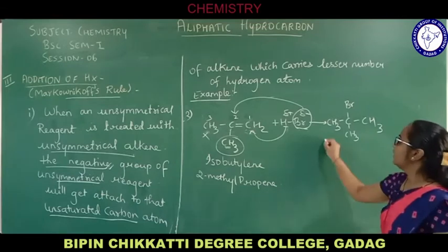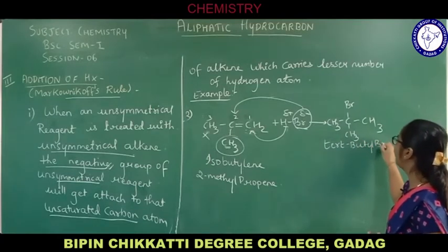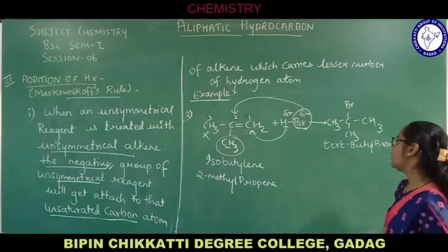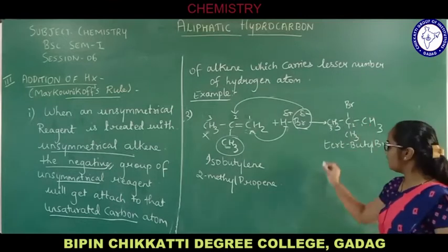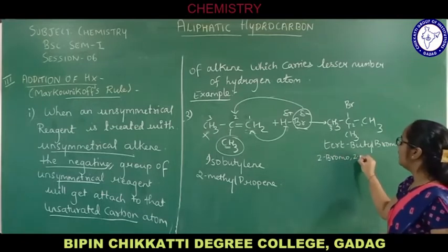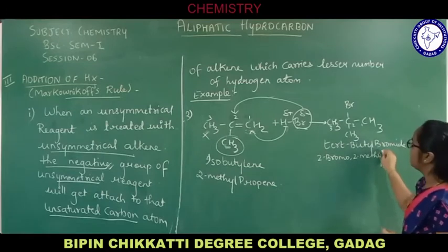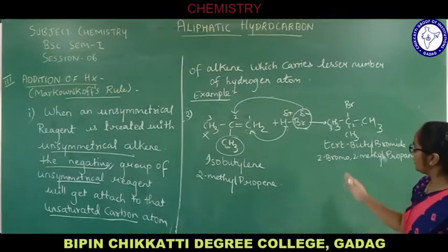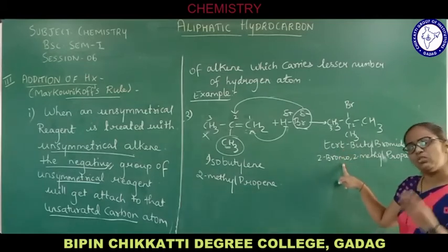The name of this product: the common name is tertiary butyl bromide, or the IUPAC nomenclature is 2-bromo-2-methylpropane. At the second position, both the methyl group and the bromo group are present, so you write 2-bromo-2-methylpropane. The common name is fine to write as well.